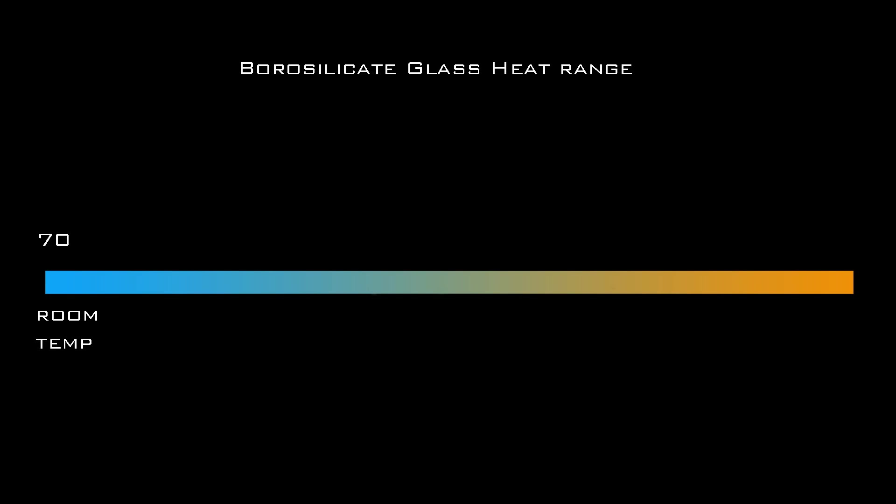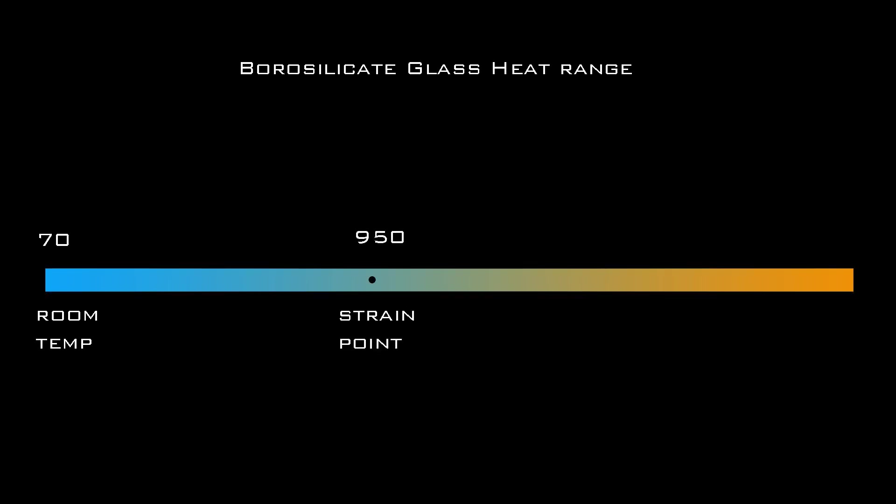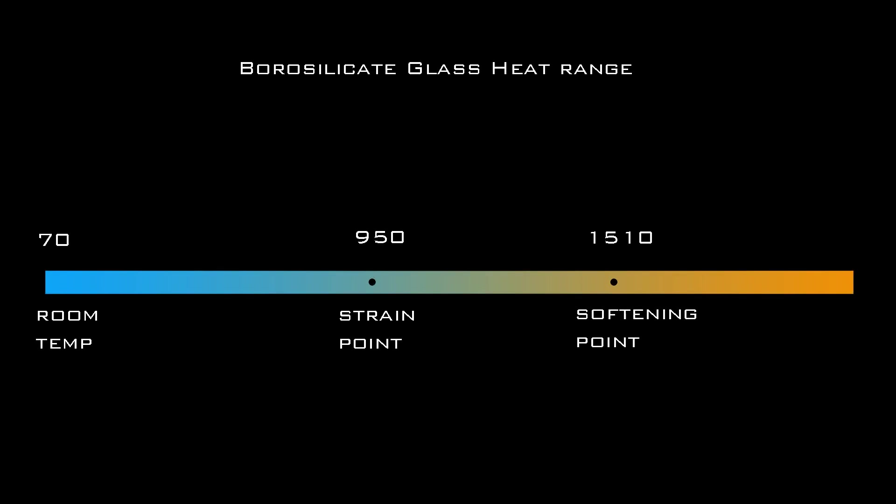From room temperature to 949 degrees Fahrenheit, borosilicate glass exhibits entirely elastic behavior. This means that the glass can experience stress, either physical or thermal, but it will not remember it after the stressing force ceases. At 950 degrees Fahrenheit, this changes and the glass begins to remember stress. This temperature is called the strain point. From the strain point to 1510 degrees Fahrenheit, the glass gradually changes from elastic to plastic. At 1510 degrees, it becomes entirely plastic — this temperature is called the softening point. Add another 600 to 800 degrees and the viscosity becomes low enough to easily manipulate the glass. This is the working temperature range.